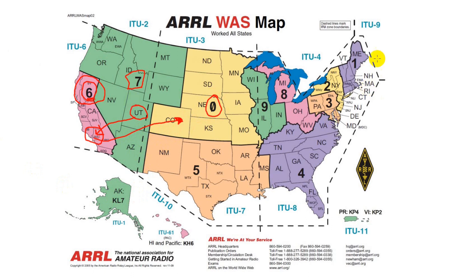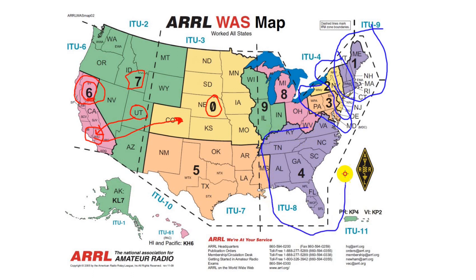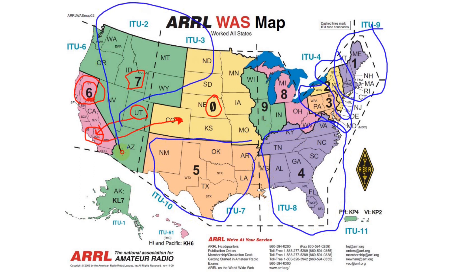Call sign area one is New England. Two is New York and New Jersey. Three is Pennsylvania, Maryland, and Delaware. Four is much larger with several states, as is five. Seven covers several states. Nine covers Wisconsin, Illinois, and Indiana. Eight covers Michigan, Ohio, and West Virginia.